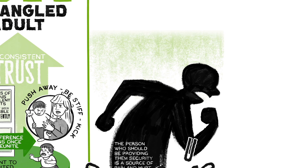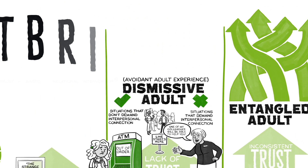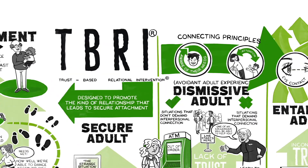When attachment is derailed, we have kids who look angry and can't regulate their emotions. In TBRI, we talk about principles. The connecting principles are designed to promote the kind of relationship that leads to secure attachment. And the engagement principles especially make a difference for children who come from hard places.